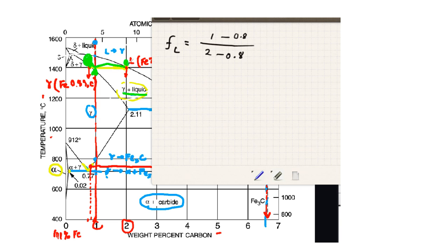So again, the liquid we're expecting to be less. So the fraction of the liquid is going to be the short segment over the total length of the lever arm.